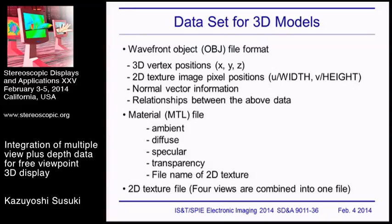The information of reconstructed 3D models is saved into three files. One is the Wavefront OBJ file format, which contains 3D vertex positions x, y, z and 2D texture image pixel positions u, v, normalized by the width and height of the image. Furthermore, normal vector information is included, along with the relationships between these data elements.